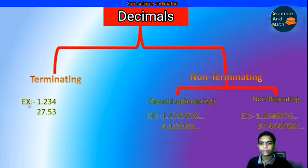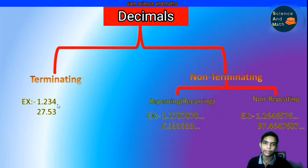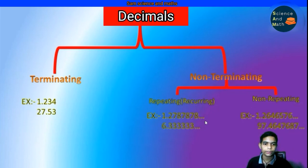Let us see examples of terminating decimals: 1.234, 27.53. These are examples of terminating decimals — they come to a stop. But in non-terminating decimals there is no stop for the decimal numbers; you can see the dots, it is moving on.